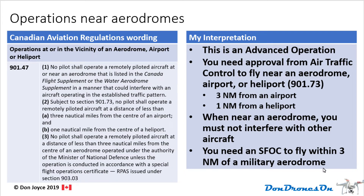Rule 901.47 covers operations at or in the vicinity of an aerodrome, airport, or heliport — this is an advanced operation. You need approval from air traffic control or the organization operating air traffic at that aerodrome in order to fly near it. The distances are three nautical miles from an airport and one nautical mile from a heliport. When near an aerodrome, you must not interfere with other aircraft. You also need an SFOC — a Special Flight Operations Certificate — to fly within three nautical miles of a military aerodrome.